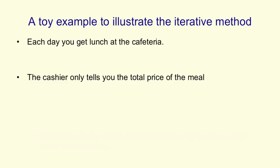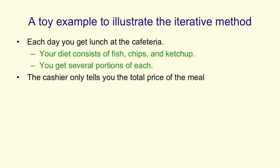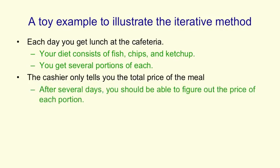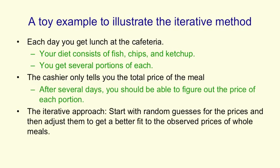I'm now going to go through a toy example that illustrates an iterative method for finding the weights of a linear neuron. Suppose that every day you get lunch at a cafeteria, and your diet consists entirely of fish, chips, and ketchup. Each day you order several portions of each, but on different days it's different numbers of portions. The cashier only tells you the total price of the meal, but after a few days you ought to be able to figure out what the price is for each portion of each kind of thing. In the iterative approach, you start with random guesses for the prices of portions, and then you adjust these guesses so that you get a better fit to the prices that the cashier tells you — those are the observed prices of whole meals.